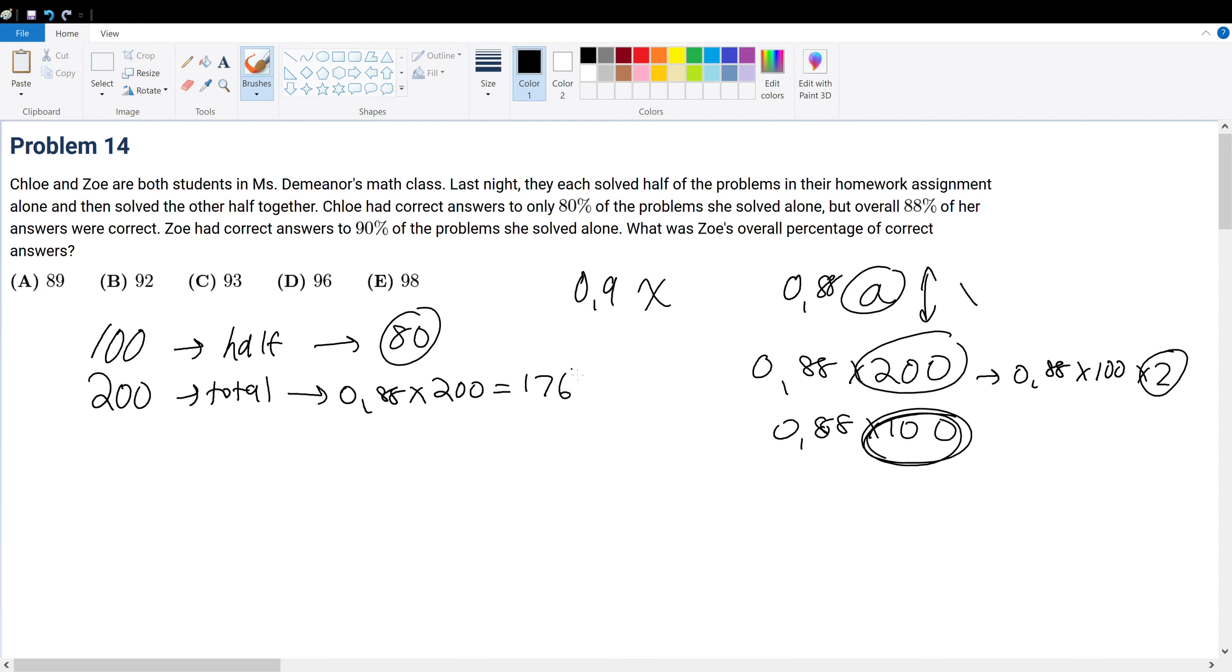She got 176 total correct, and 80 of those correct answers were done by herself. Then the remaining 96 questions must have come from working together, because remember they worked together for half the problems.